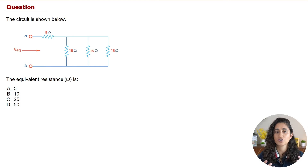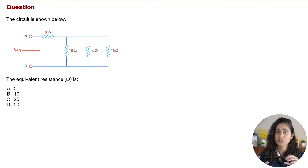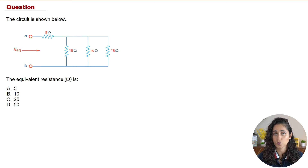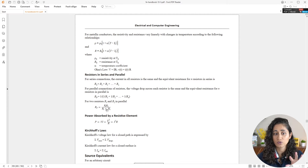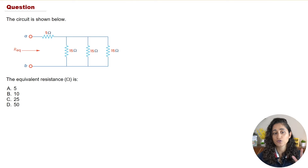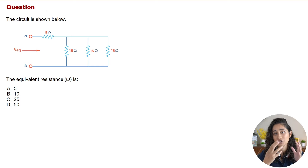Here we are given a circuit and we want to determine the equivalent resistance. A lot of times when we have resistors in parallel and in series, we want to find the equivalent resistance. If we go to the reference handbook under electrical and computer engineering, we're given the equations for resistors in series and in parallel. First you have to determine which resistors are in parallel and which are in series.